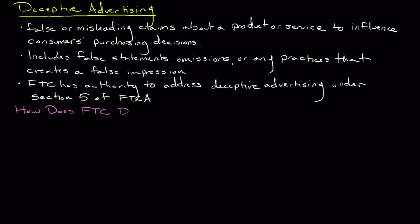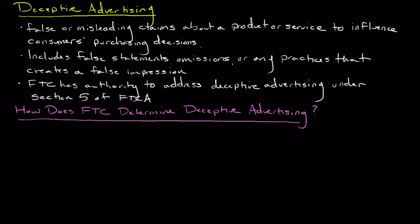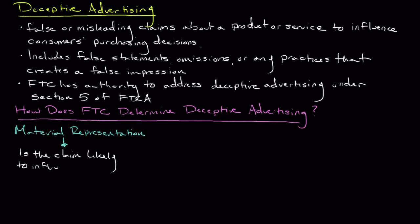How does the FTC determine what constitutes deceptive advertising? The FTC relies on a set of criteria to assess whether an advertisement is deceptive. The first is material representation — the key question being: is there a representation, omission, or practice that is likely to mislead the consumer? The FTC looks at whether the claim is important to consumers and will likely influence their purchasing decision.